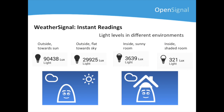Moving on to WeatherSignal, an experiment we did with the first layer of the WeatherSignal app was comparing the light levels in different rooms. We used the reading from the light sensor for this, and discovered significant changes between pointing your phone towards the sun, just keeping the phone outside pointing flat towards the sky, putting the phone inside in a sunny room, and putting it in a shaded room.